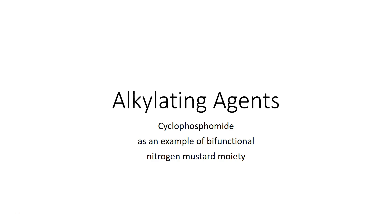We're going to start with cyclophosphamide as an example of a bifunctional nitrogen mustard moiety, which is the main mechanism of action for our alkylating agents. This is really going to lead the way as far as how all of our nitrogen mustard or alkylating agents are working.